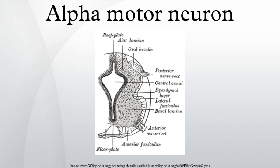By contrast, the hypoglossal nucleus, which contains alpha motor neurons that innervate the tongue, is found in the medulla, the most caudal of the brainstem structures. In the spinal cord, alpha motor neurons are located within the gray matter that forms the ventral horn. These alpha motor neurons provide the motor component of the spinal nerves that innervate muscles of the body. As in the brainstem, higher segments of the spinal cord contain alpha motor neurons that innervate muscles higher on the body.